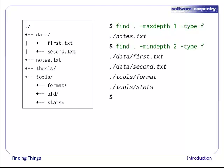The opposite of -maxdepth is -mindepth, which tells find to only report things that are at or below a certain depth. -mindepth 2 therefore finds all the files that are two or more levels below us.